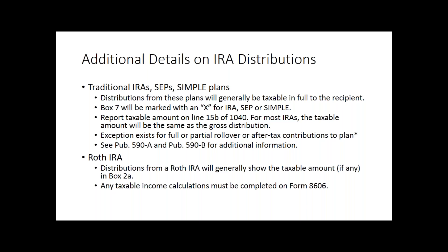Same thing with the Roth IRA. Traditionally, if someone has a Roth account, we don't typically see a lot of Roth distributions yet — a lot more traditional IRAs. But if you do get a Roth IRA distribution, we follow the 1099-R. If it's going to be taxable, the coding will be correct and we'll just report it as shown. If there are any calculations we need to do with a Roth account, that has to go on Form 8606. So if you have to go through any iterations with the Roth, we do have to attach that additional form.